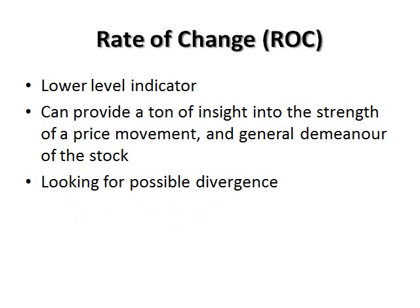Moving along, we have some more visual points to take care of. The first one is that the rate of change is a lower-level indicator — in other words, it's not plotted against the price chart, which would be called an upper-level indicator. The other difference to define is that you're looking for divergence when looking at the rate of change. The price of the stock may be going up, but the rate of change may be going down, or vice versa.